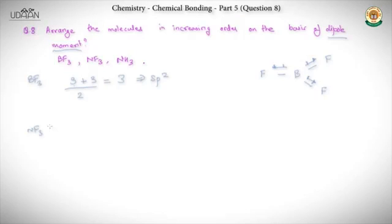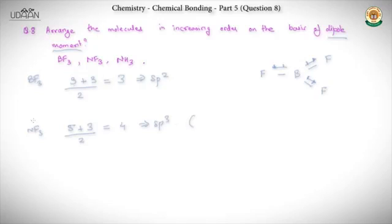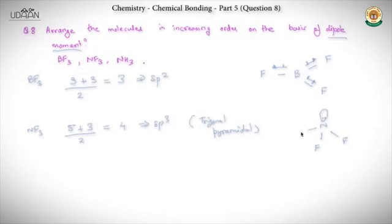For NF₃: nitrogen has five electrons in the outermost shell plus three for fluorine — using the formula we get sp³ hybridization. This is tetrahedral with one lone pair on nitrogen, so the shape is trigonal pyramidal: nitrogen at center with a lone pair on top and three fluorine atoms bonded to it.